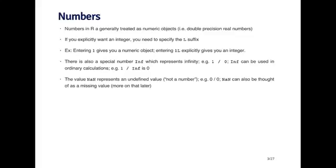Perhaps the most important type of object in R is the number. So numbers in R are generally treated as what are called numeric objects. So pretty much all numbers are treated as double precision real numbers. So even if you're looking at a number that's like one or two, R thinks of those numbers as numeric objects.